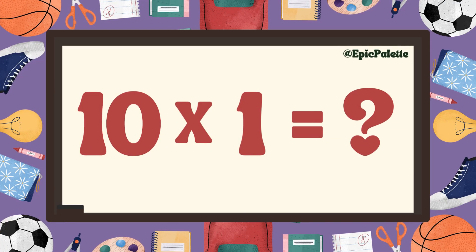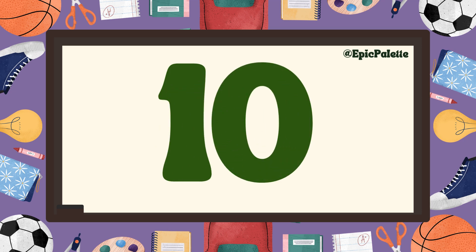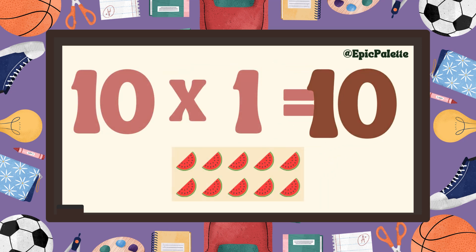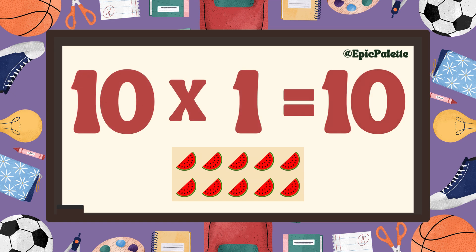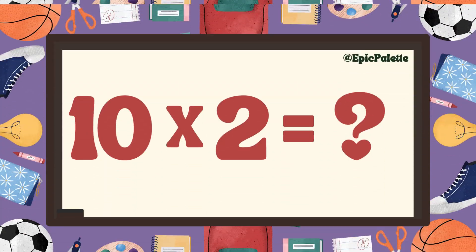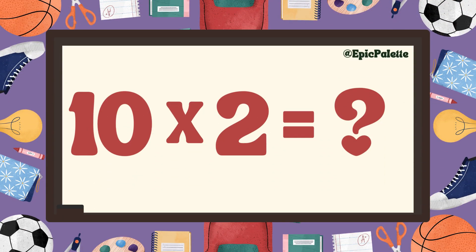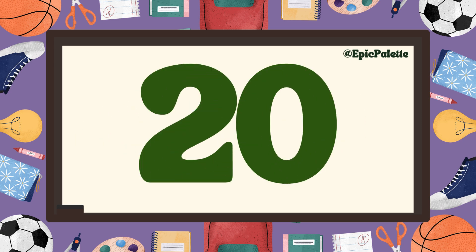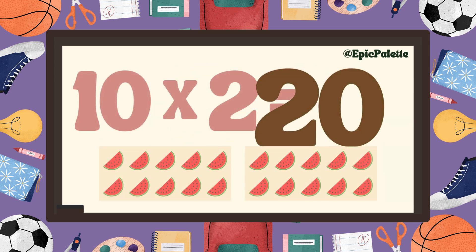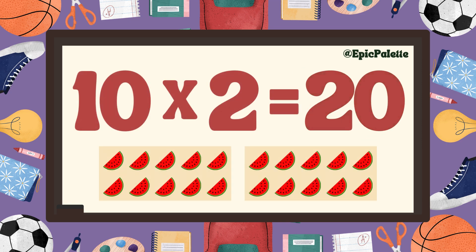Ten times one equals... Ten! That's right. Ten times one equals ten. Ten times two equals... Twenty! That's right. Ten times two equals twenty. Excellent!